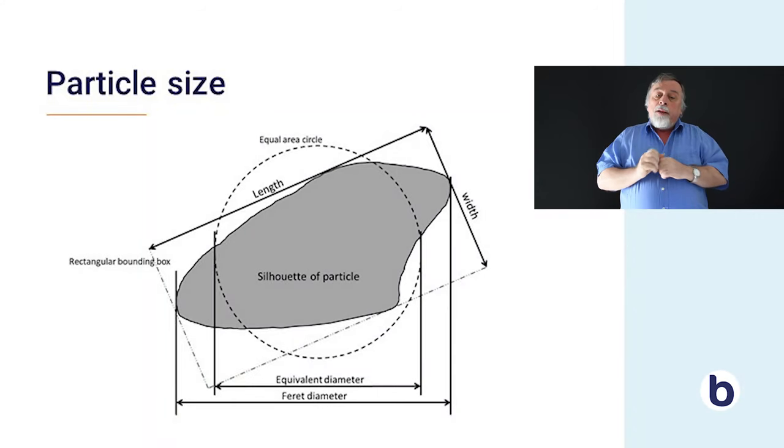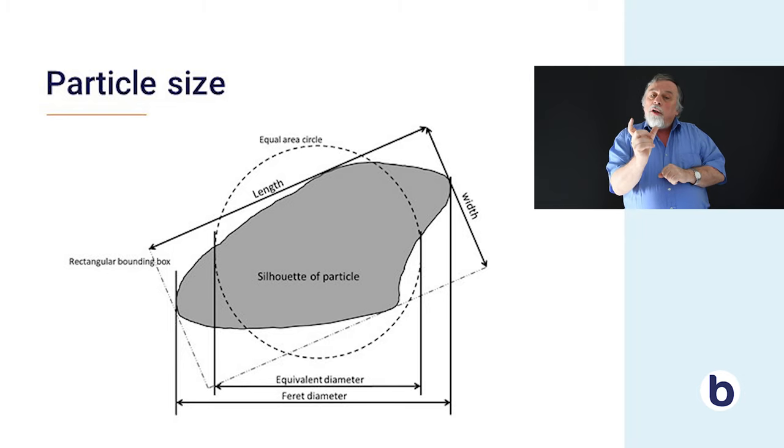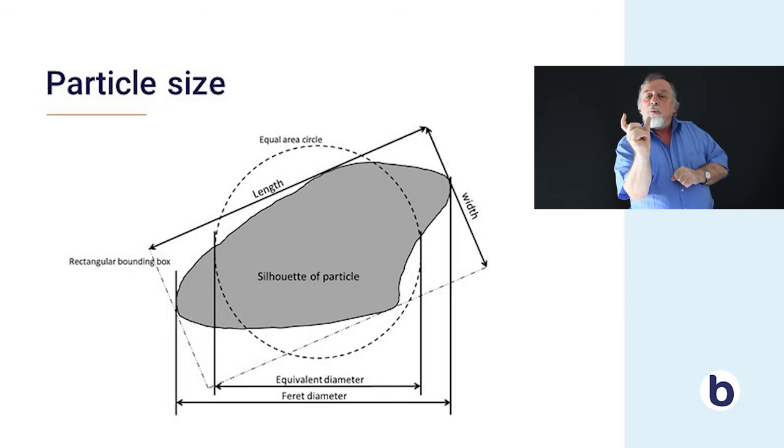Particle size: particles are three-dimensional objects — they are not spheres but have all kinds of odd shapes, so it is difficult to determine particle size with just one number. When you look at particles on a surface through a microscope, you see the silhouette of a particle. For surface cleanliness, we take the largest dimension of the particle, called the Feret diameter — the dimension of a particle when placed between a caliper.